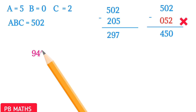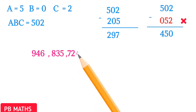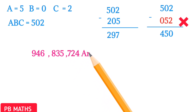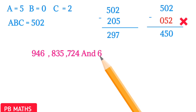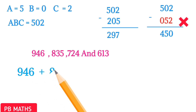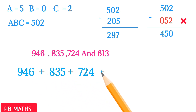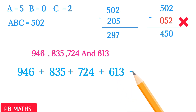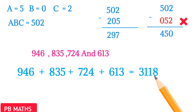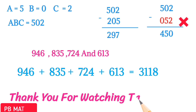Therefore, the possible 3-digit numbers ABC are 946, 835, 724, and 613. Their sum is 946 + 835 + 724 + 613 equals 3118. That is the answer. I hope you all got this answer. Thank you for watching the video.